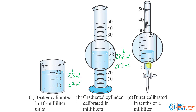Over here on the burette, this is even more precise — we'll have more significant digits because the ones are marked (28, 29, 30) and the tenths are also marked (28.1, 0.2, 0.3). I still have to go one more, so I know for sure it's 28.3 and I estimate one more to say 28.32. If you think it's 28.31, that's fine because we're estimating in the same digit. Notice how these values all got more precise: the beaker had two significant digits, the graduated cylinder gave us three, and the burette gave us four significant digits — each more precise than the last.